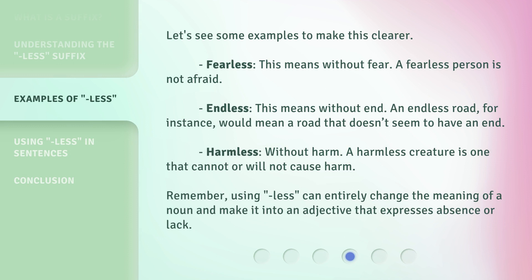Let's see some examples to make this clearer. 'Fearless' — this means without fear; a fearless person is not afraid. 'Endless' — this means without end; an endless road, for instance, would mean a road that doesn't seem to have an end. 'Harmless' — without harm; a harmless creature is one that cannot or will not cause harm. Remember, using '-less' can entirely change the meaning of a noun and make it into an adjective that expresses absence or lack.